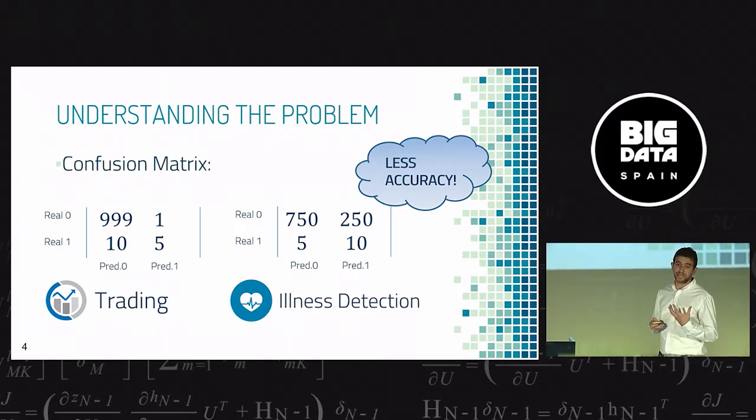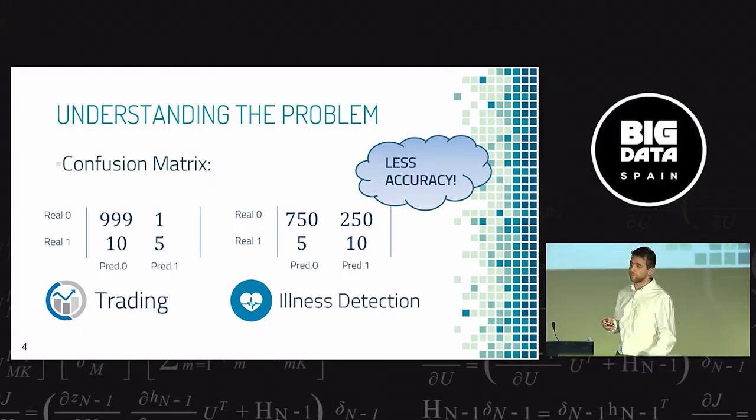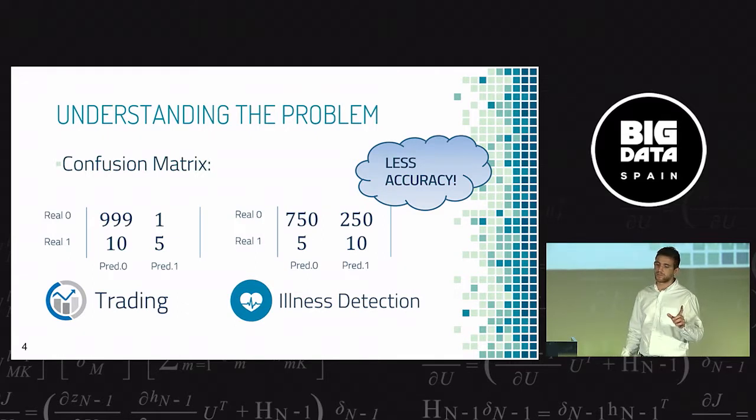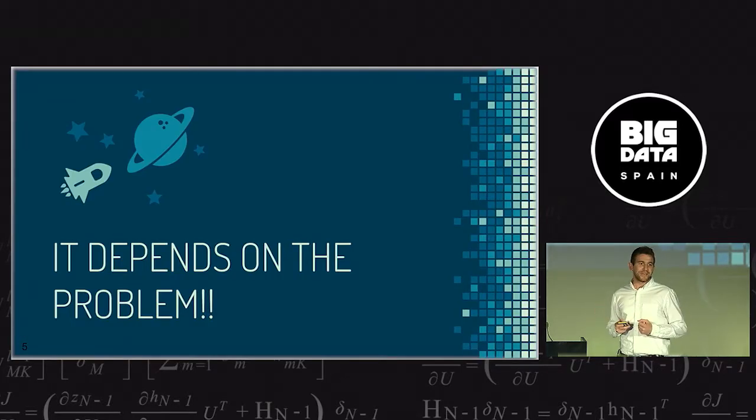On the other hand, if I'm working on illness detection, I prefer the right one. Because I'm making almost 300 medical exams to detect just 10 ill people, but I'm saving five more lives than in the first case. So I don't mind paying for that medical exam if I can save five more lives. The answer is it depends on the problem.